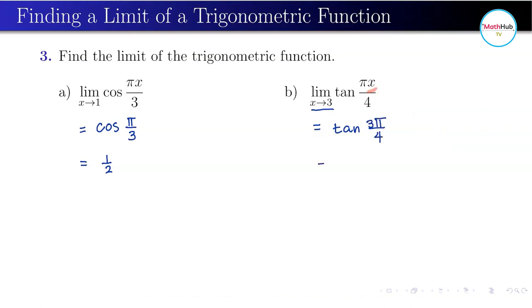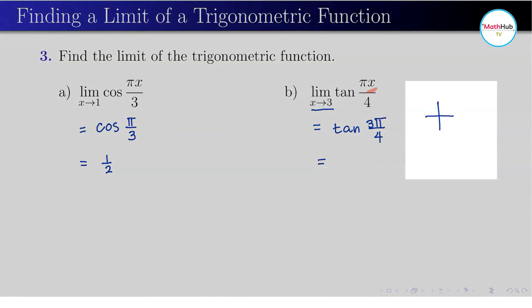Then just evaluate that one. You know that 3π over 4 is on the second quadrant. So this is your 3π over 4.